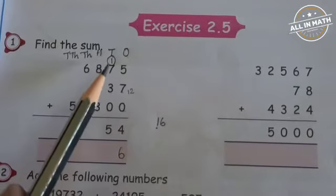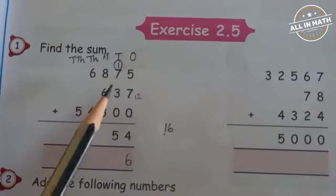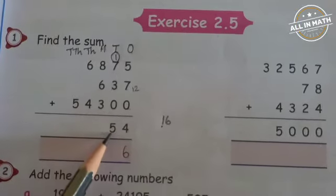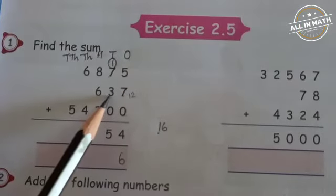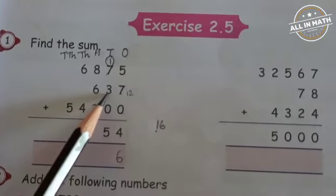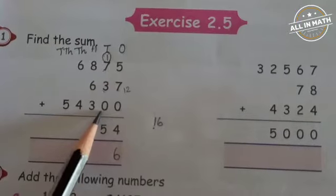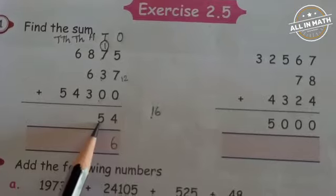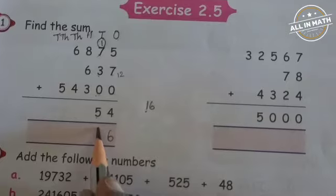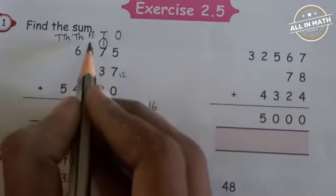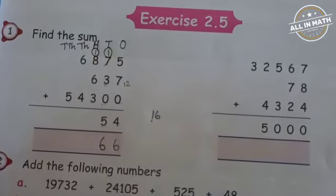Now we are going to add the numbers in the 10's place: 1, 7, 3, 0, 5. What is 1 plus 7? It is 8. 8 plus 3? 11. Good, 11 plus 0 is 11. 11 plus 5? Yes, it is 16. So write 6 here and 1 as the carry over in the 100's place.